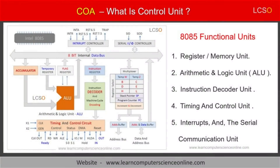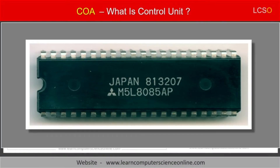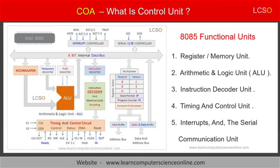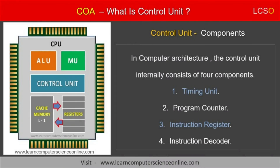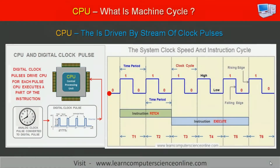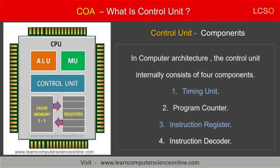In this example, we will study the Intel 8085 microprocessor architecture to understand the various components of the control unit. Let us start with the timing unit, which is the first component of the control unit. The central processing unit is driven by a stream of clock signals. These clock signals are generated by the timing unit of the control unit. The timing unit internally consists of a quartz oscillating crystal that generates the analog signals.